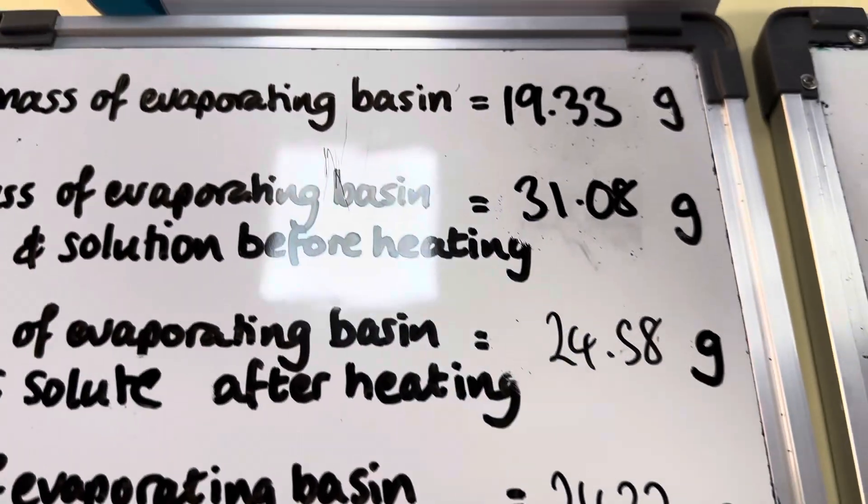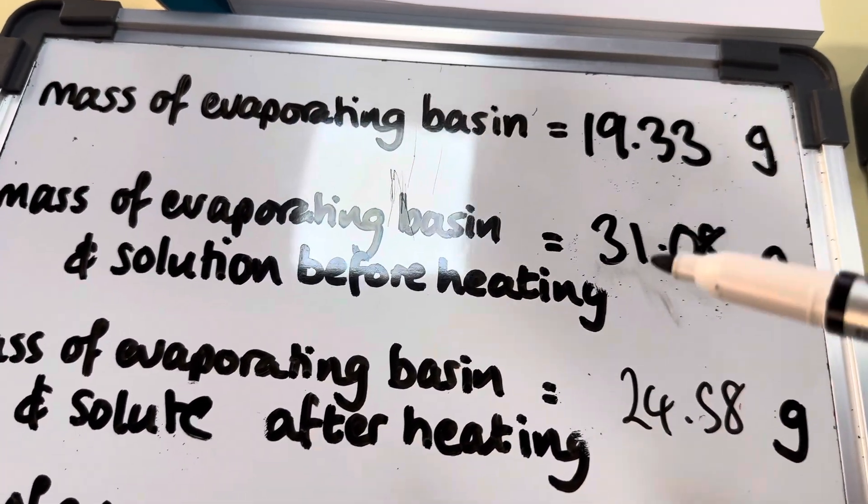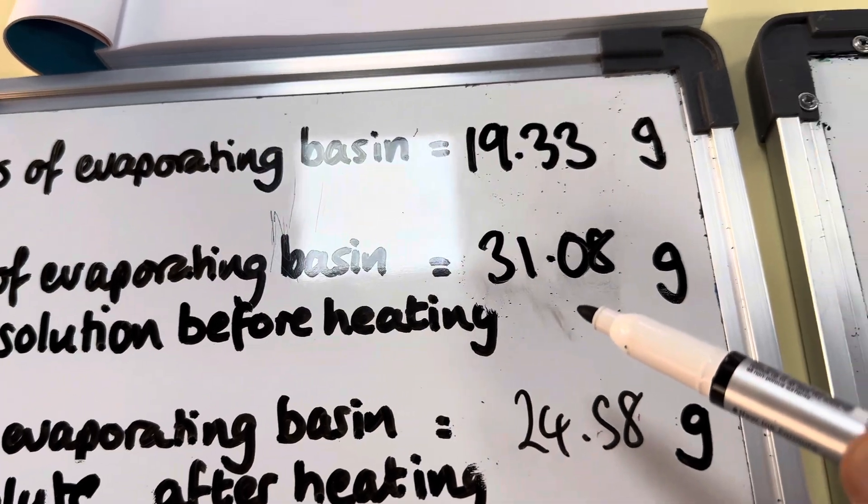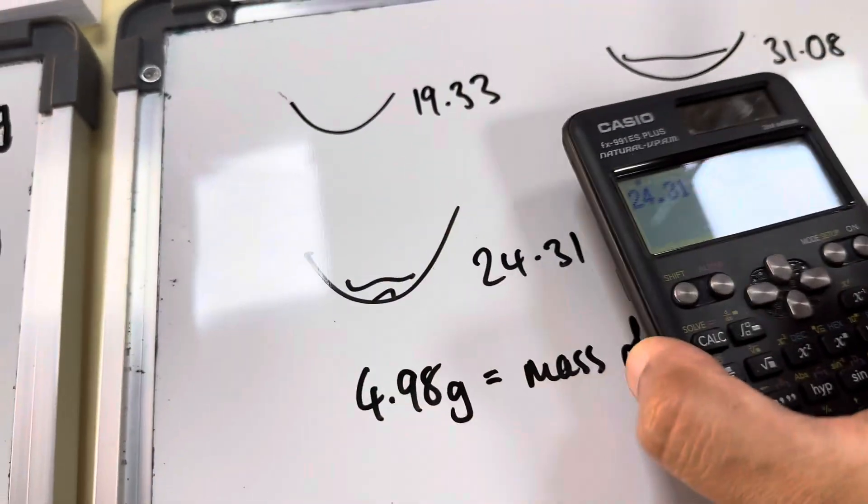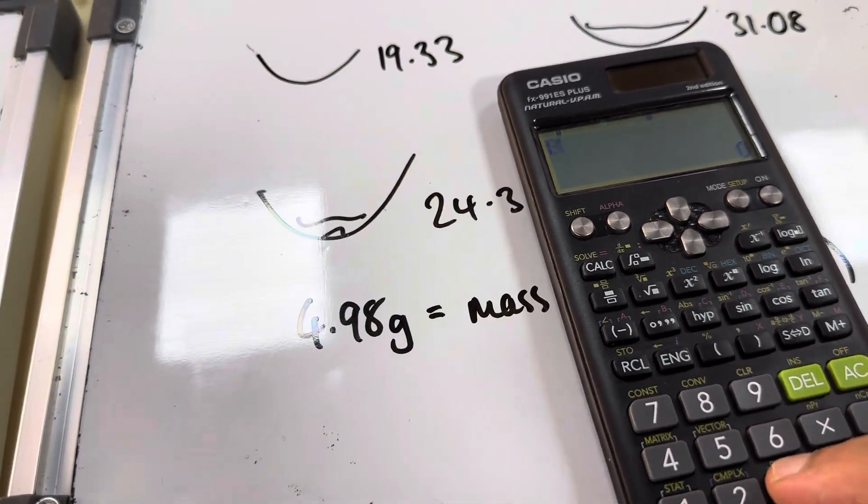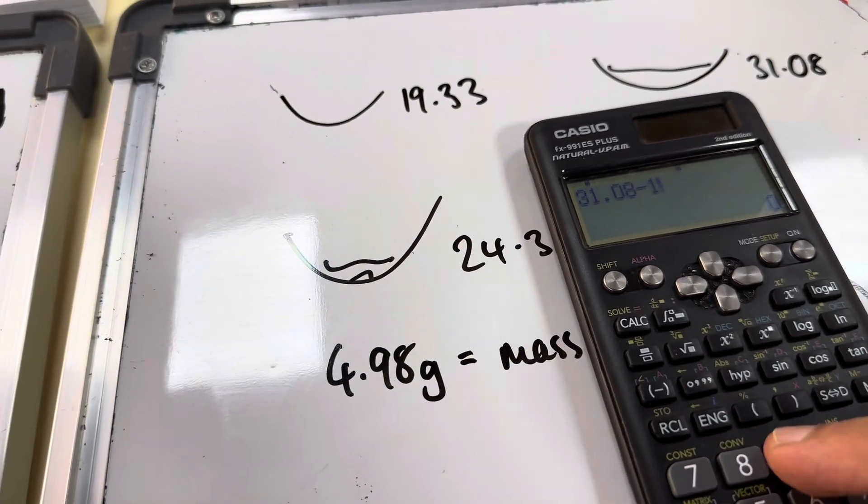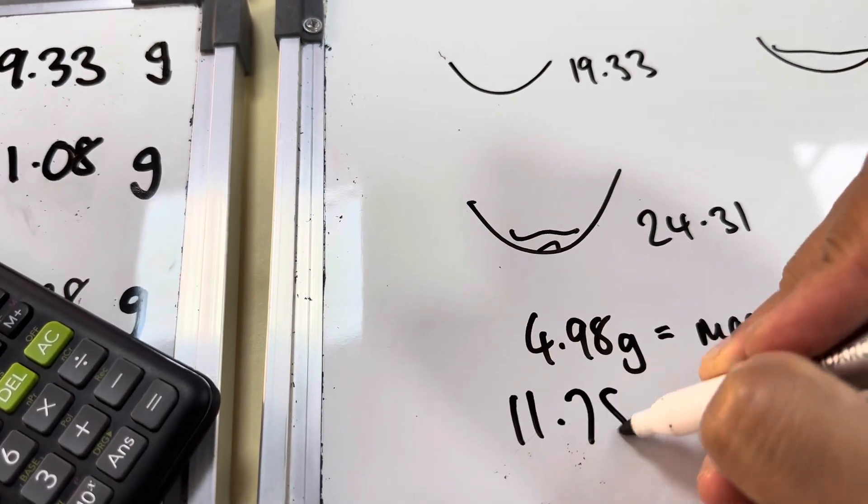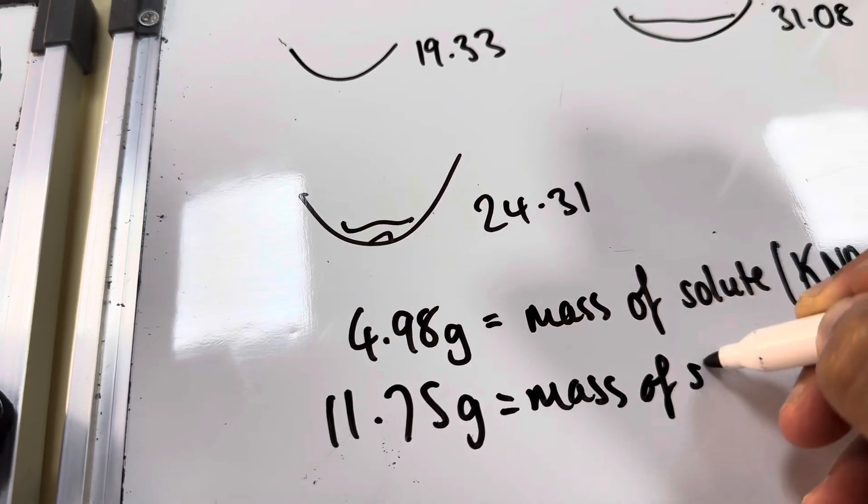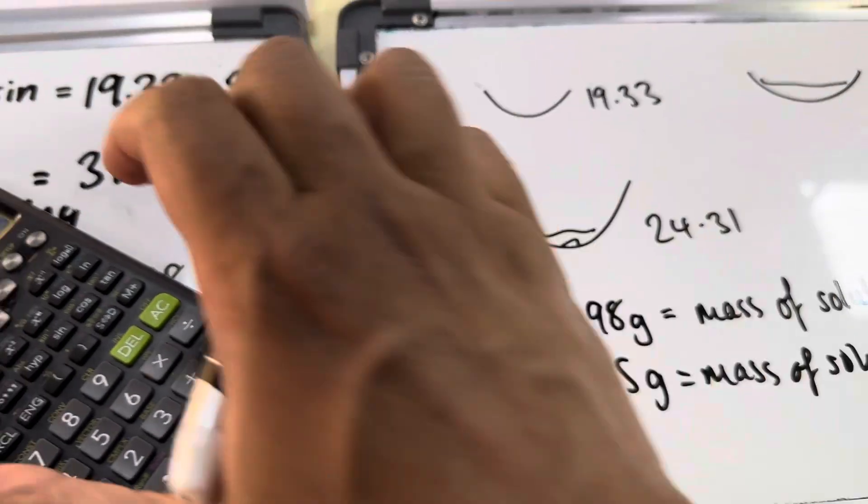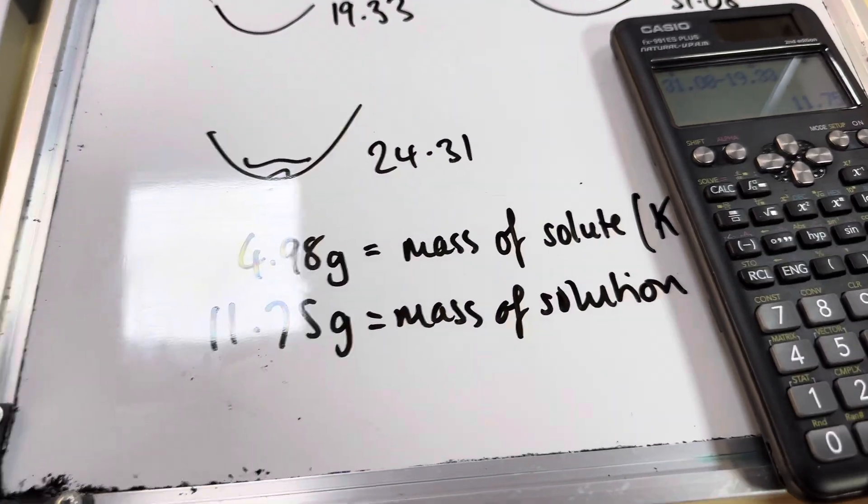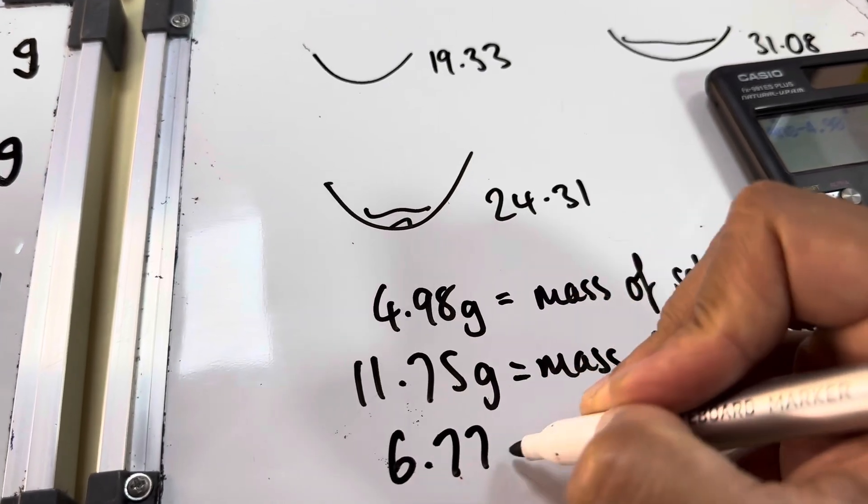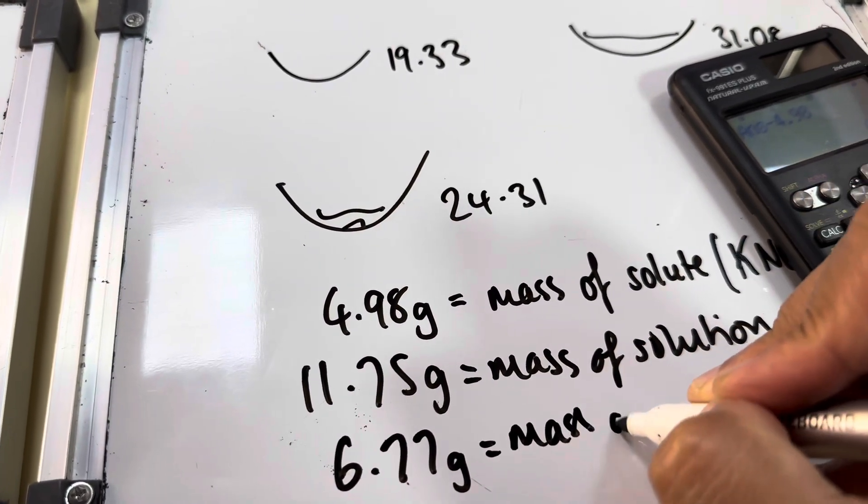If we go back to our value where the solute was in the solvent forming the solution, that's 31.08. So 31.08 take away 19.33 actually gives me 11.75. Now 11.75 is equal to the mass of the solution. If I take away the 4.98 from that, I will have the mass of the water. So 11.75 take away 4.98 equals 6.77 grams, the mass of the water used.